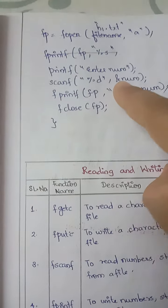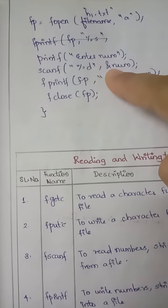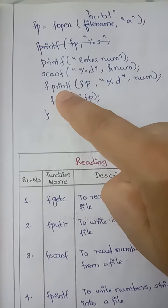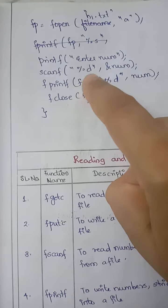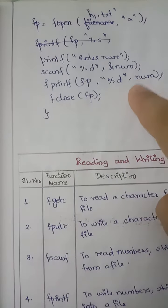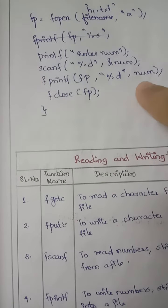If you want to write a number or a string into a file, you have to use the fprintf function. The fprintf syntax is fprintf with the file pointer, format specifier, and the variable (num).